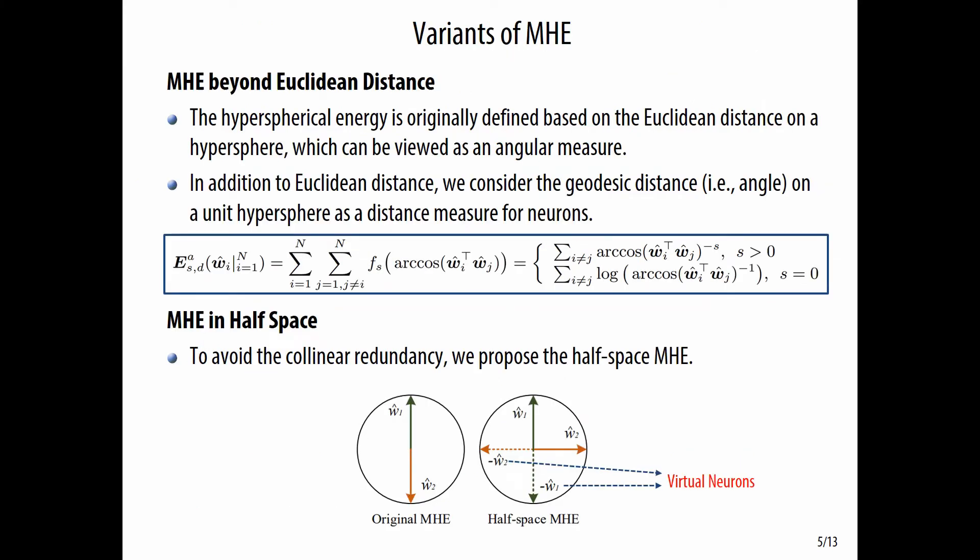We also consider some interesting and useful variants of MHE. For example, we can use the geodesic distance on the hypersphere instead of the Euclidean distance. The geodesic distance on a hypersphere is in fact the angle. To avoid collinear redundancy, we propose the half-space MHE, which combines a group of virtual neurons in the original formulation. These virtual neurons have the opposite direction to the original ones.